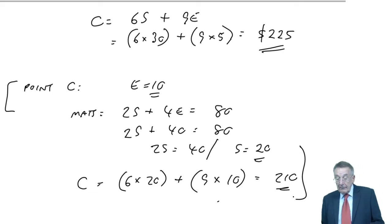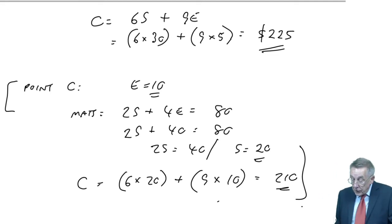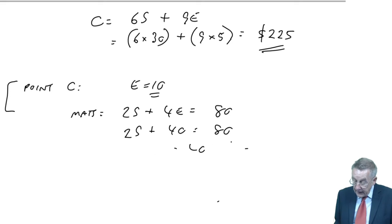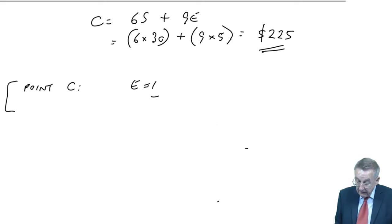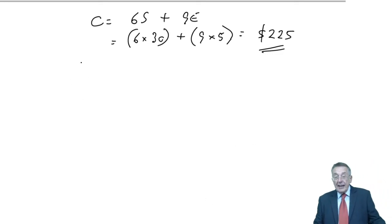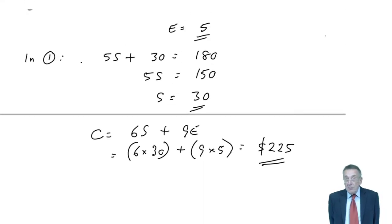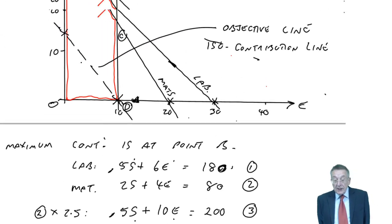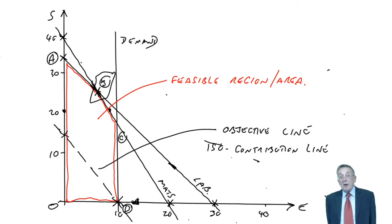It was also on the materials line. C was where materials cross demand. And so the materials line, 2S plus 4E equals 80. If E is 10, then 2S plus 40 equals 80. 2S would be equal to 40, therefore S would be equal to 20. So those are values of point C, but what would the contribution be? The contribution at that point would be 6 for each of 20 S plus 9 contribution for each of 10 E, is 120, 90. It would be 210. It's lower, so that was a complete waste of time.